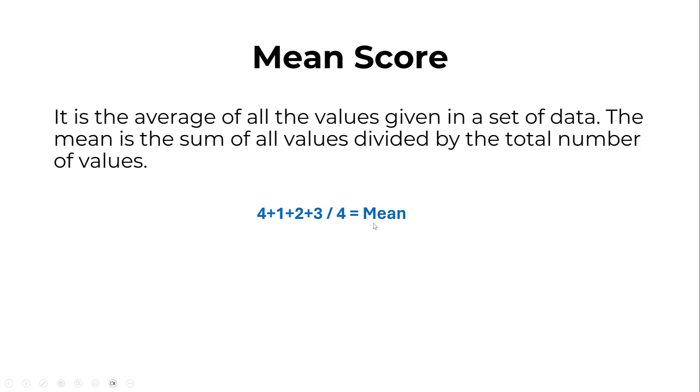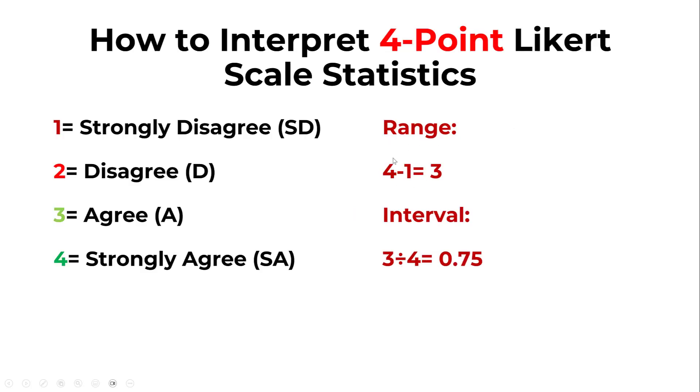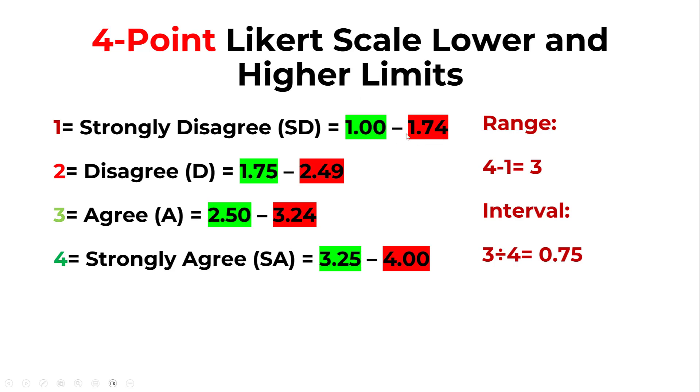So how to interpret the mean score? First we take the range of the four-point Likert scale. We get three, and we divide three by four to get 0.75. So we start with one as the lowest value.